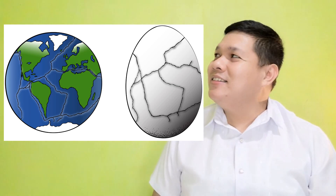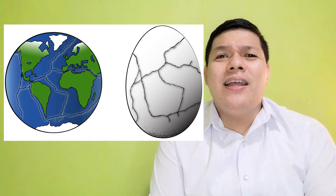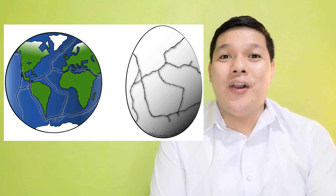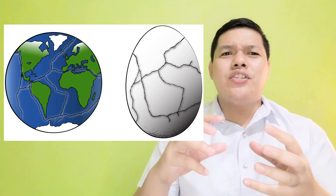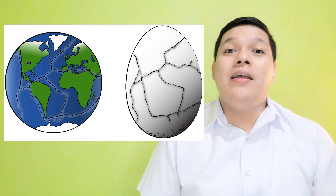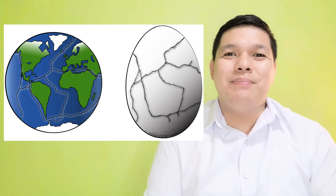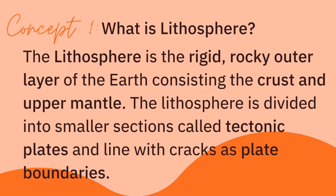For you to understand better, let us take a look at the picture of the hard-boiled egg. Let us imagine that the Earth is just like this egg. The shell of the egg resembles the Earth's lithosphere. The sections of the shell that have cracks represent the tectonic plates, and the lines of the cracks represent the plate boundaries. The lithosphere is the rigid, rocky outer layer of the Earth consisting of the crust and upper mantle, divided into smaller sections called tectonic plates, lined with cracks as plate boundaries.